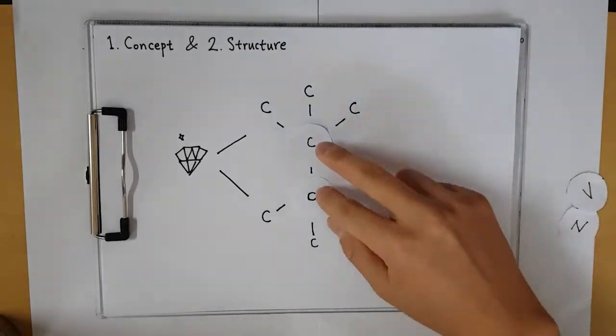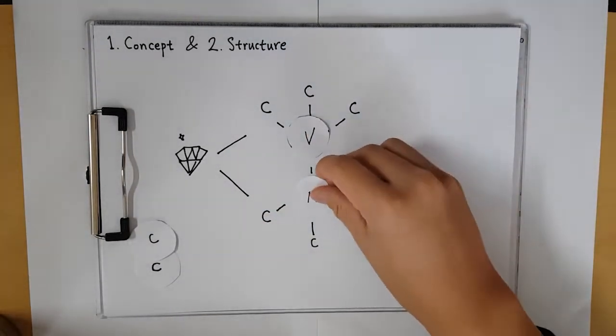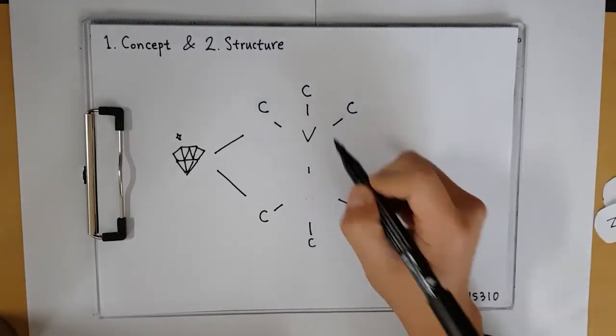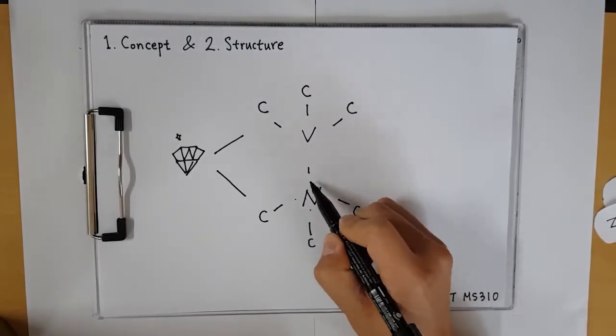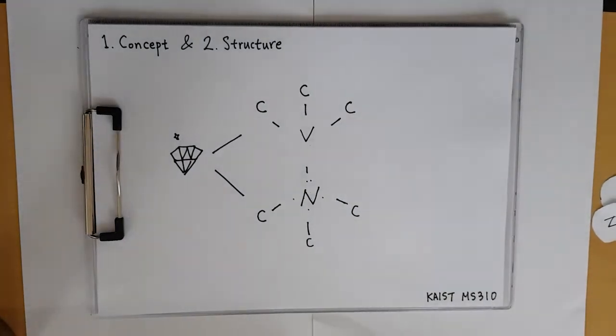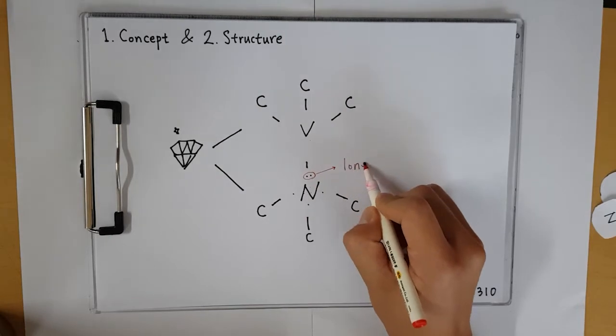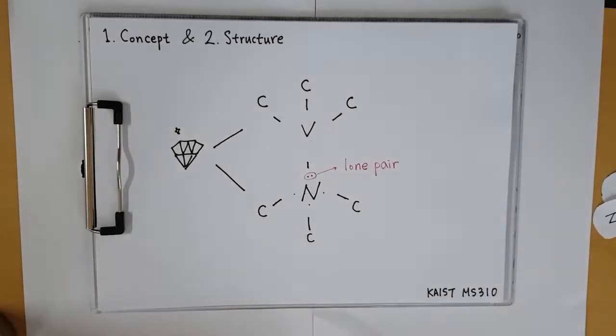But what happens is that two carbons can be replaced by one Nitrogen atom and another vacancy. This Nitrogen atom has five valence electrons and three of them covalently bond to the carbon atoms next to it, and two remain non-bonded electrons called a lone pair.